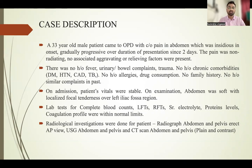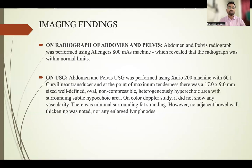Radiological investigations were done to identify the pathology. A radiograph of the abdomen and pelvis in erect AP view was done, USG of the abdomen and pelvis was done, and a CT scan of the abdomen and pelvis, plain and contrast, was done. The radiograph performed using the Allen's 800 MAS machine revealed findings within normal limits.